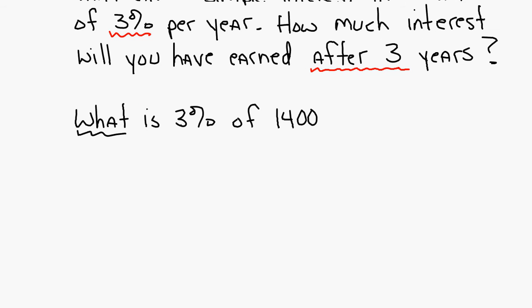What is? So here's your template. Is over of equals percent over 100. The is is what you're trying to find, so there's your variable. The of is 1,400. Percent is 3. This proportion will give you 3% of 1,400. So crisscross multiply, it's going to be 100x equals 3 times 1,400 is 4,200.